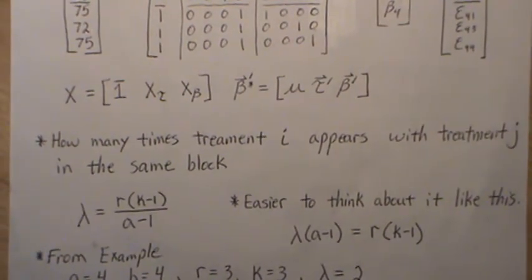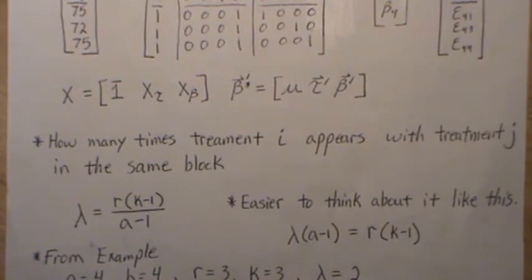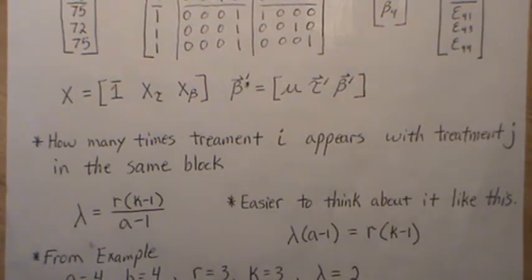Lambda represents how many times treatment i appears with treatment j in the same block. Earlier in this example, we said they occurred twice, so lambda is two in this example.